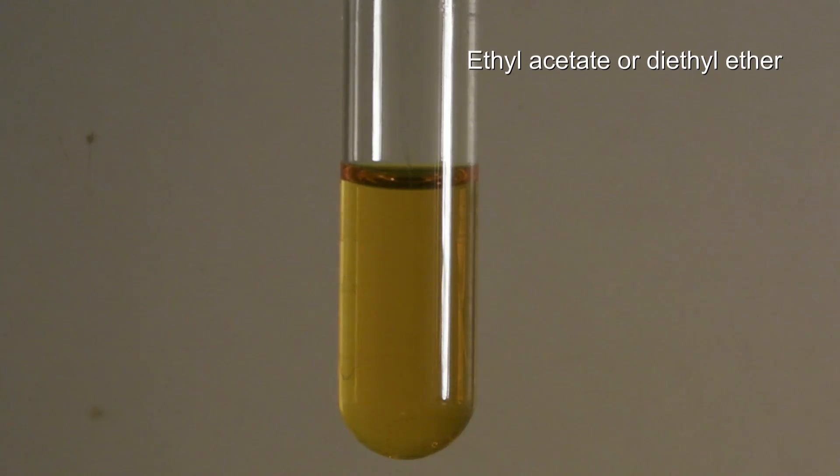Then a layer of ethyl acetate or diethyl ether is added on top of the dichromate solution.